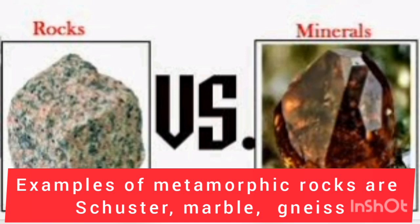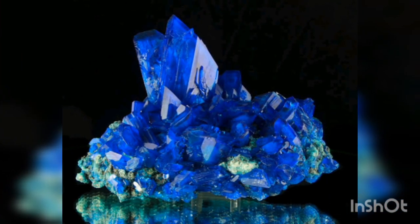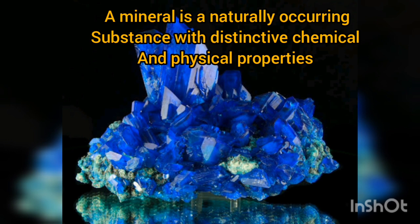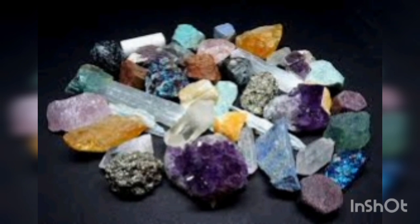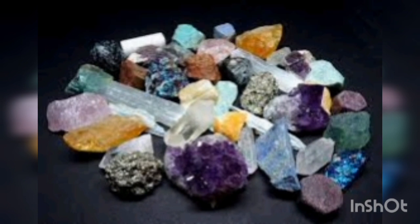Now let's compare a rock with a mineral. From this picture, a mineral looks shiny compared to a rock — minerals look polished. A mineral is a naturally occurring substance with distinctive chemical and physical properties. Their physical and chemical properties are distinct and exact — they are not shared among themselves. Minerals are made from the same elements or a combination of elements.